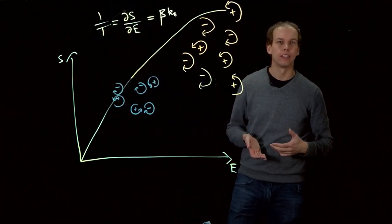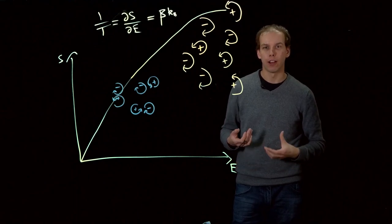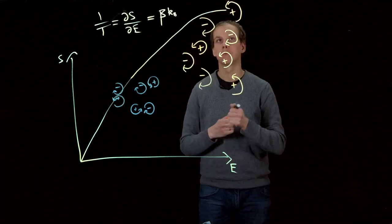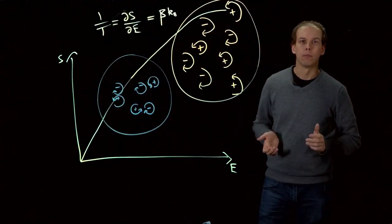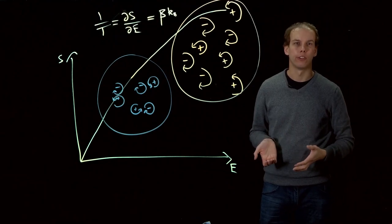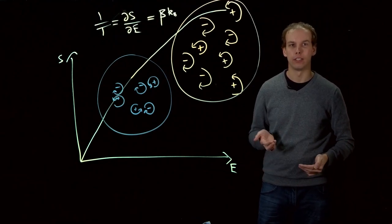But as Onsager pointed out, if the fluid is confined, so that the vortices can only exist in a finite area, then even the most random configuration of vortices isn't going to correspond to the highest possible energy in this flow field.